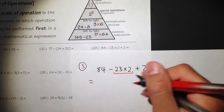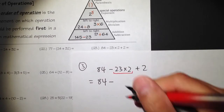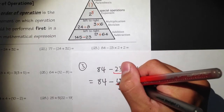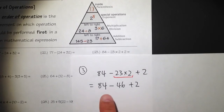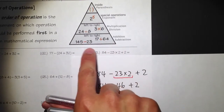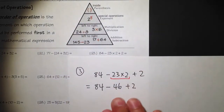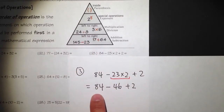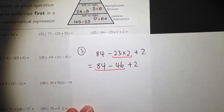So anything else will stay the same. We have 84, and then we keep the minus. We work out 23 times 2 — the answer to that is 46 — and then we add a 2 at the end. Now we see we have subtraction and addition. They are on the same level of the order of operations pyramid, so we are just going to do it from left to right. We should first work out 84 minus 46.